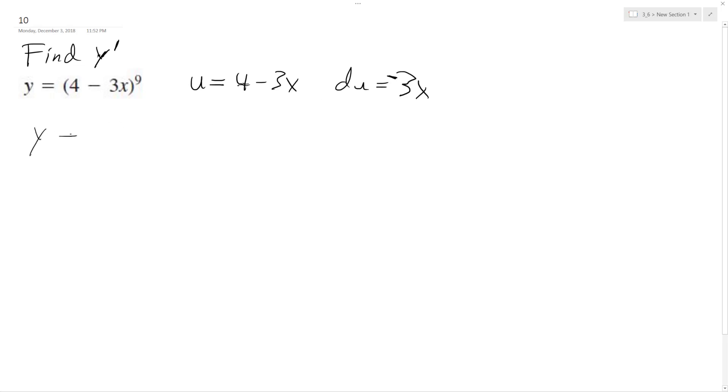So y is equal to u raised to the ninth. Y prime is equal to 9u raised to the eighth times du, which is going to be negative 3—oh sorry, we'll just put du here. I need to substitute it.